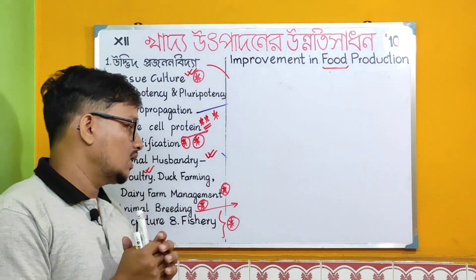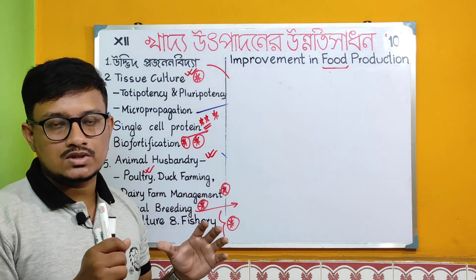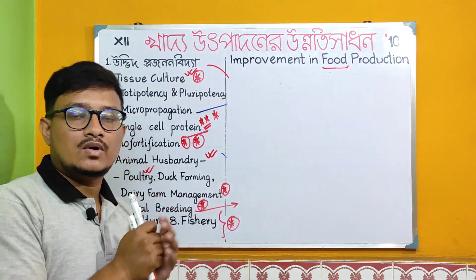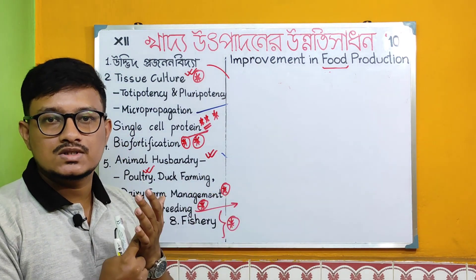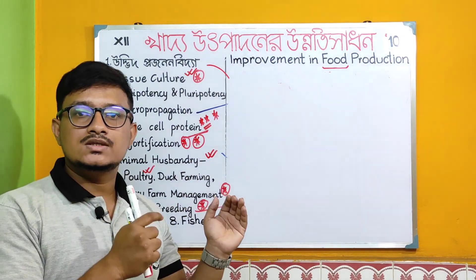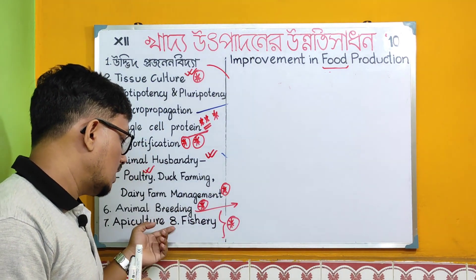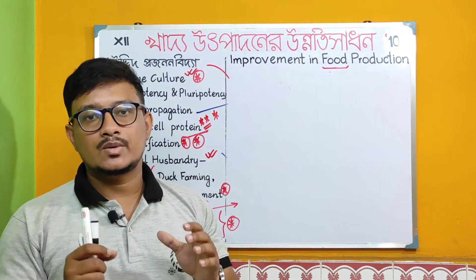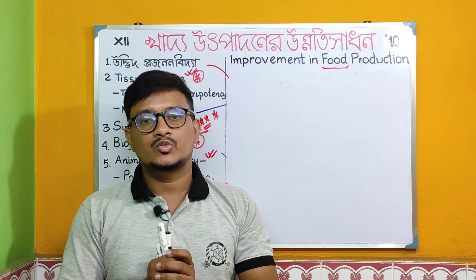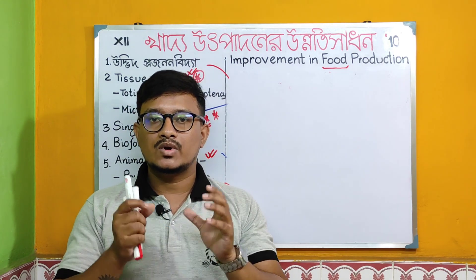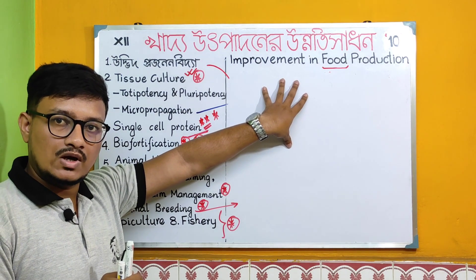Animal husbandry covers dairy farming, management, pasture cleaning, different farming strategies, animal breeding — example buffalo system, cow system. Apiculture covers bee culture, waggle dance, and different types of dances. Fishery or pisciculture covers different types of fish, weather, follicle stimulating hormone, and luteinizing hormone strategies for food production improvement.